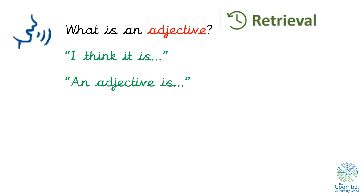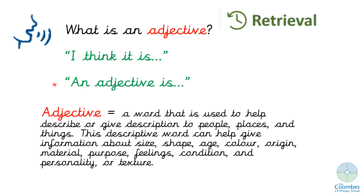Let's quickly recap what an adjective is. I'd like you to have a discussion with your adult about what you understand by the word adjective — you can tell them 'I think it is' or 'an adjective is.' An adjective is a word that is used to help describe or give description to people, places and things. It gives lots of descriptive information about lots of different things like size, shape or age. Well done if you got that right.